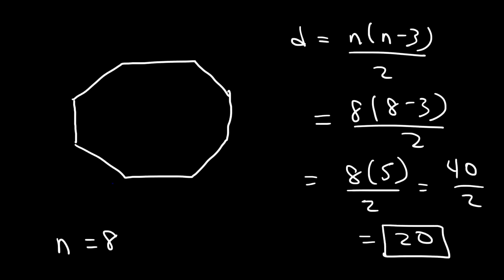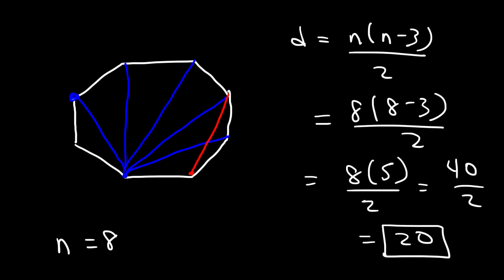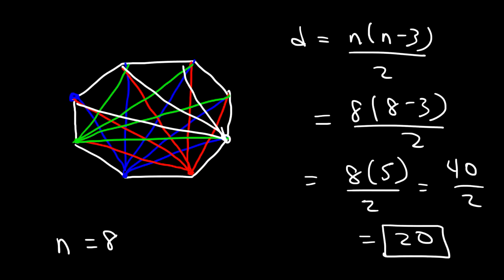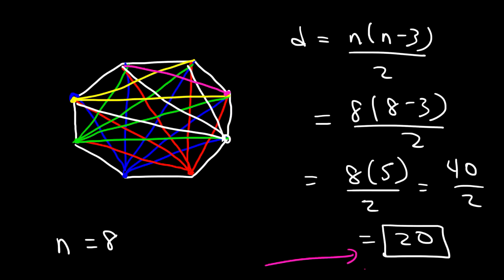Let's verify by drawing them out. Starting from one point: 1, 2, 3, 4, 5. Next point: 6, 7, 8, 9, 10. Next: 11, 12, 13, 14. Then: 15, 16, 17. Then: 18 and 19. The last one — from here to here — makes 20. So that's how you can show the 20 diagonals in an octagon.